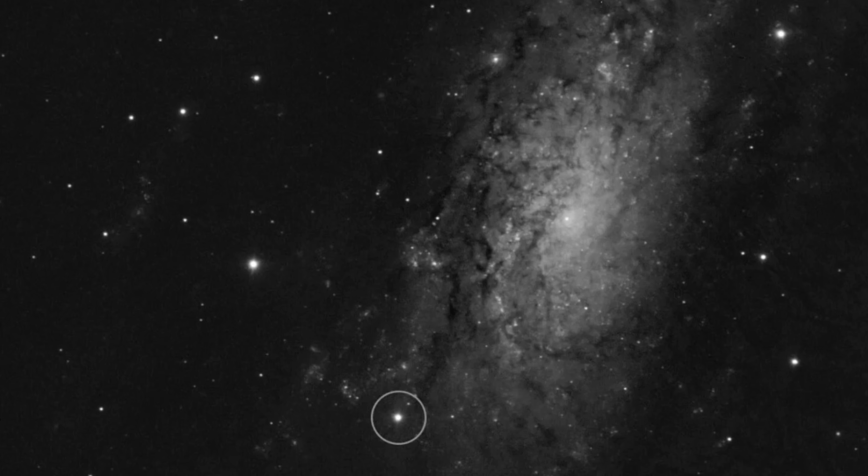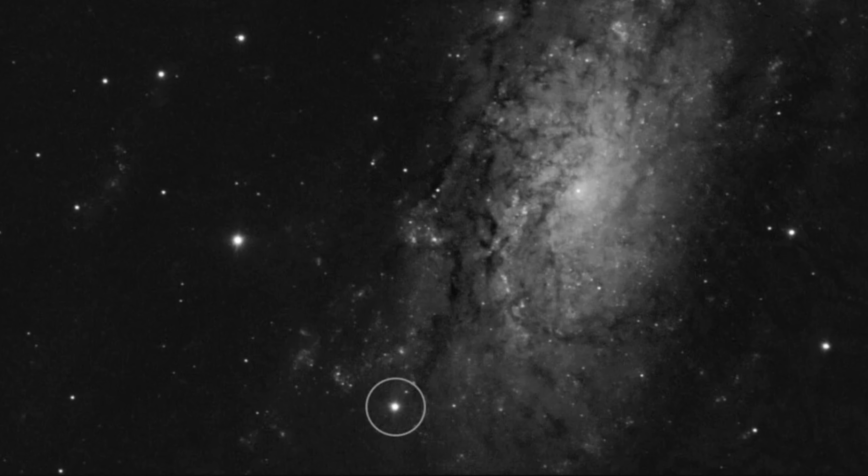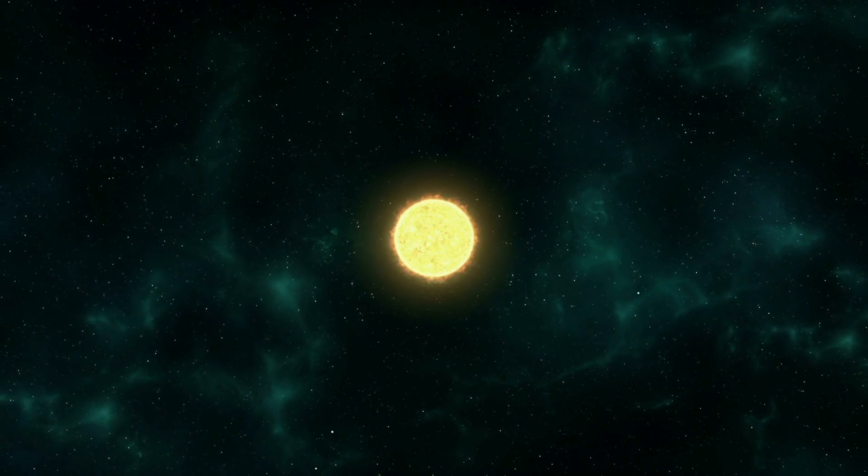We're looking at an actual supernova that happened last year in a nearby galaxy NGC 3621 that's about 22 million light years away from us. There's something really important that scientists were able to discover in this particular observation that once again contradicts some of the modern predictions and models.